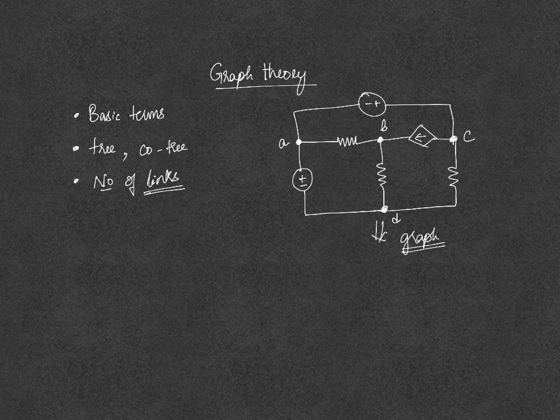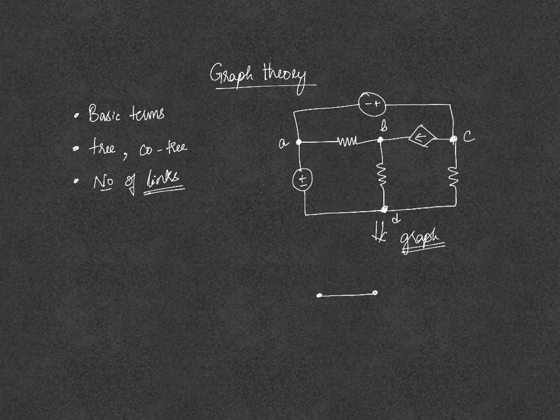Between A and B, you have a resistor, so we will draw a simple line. Whenever you are converting from a network to a graph, you just replace all the elements that are there between each node with a simple line.